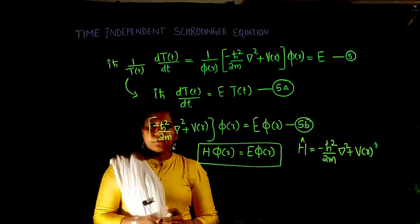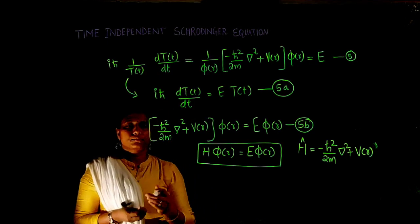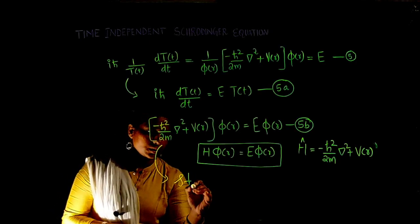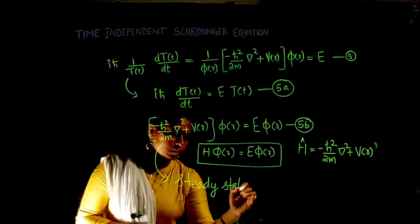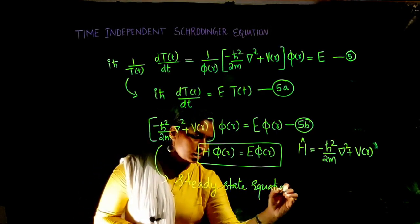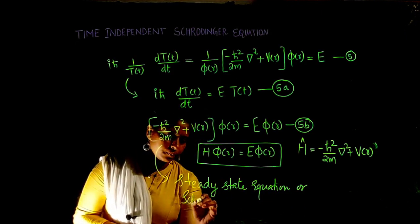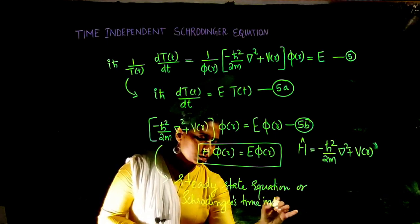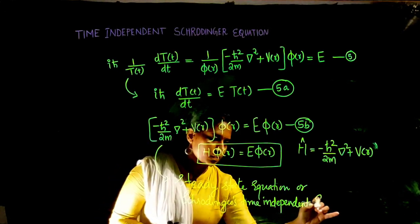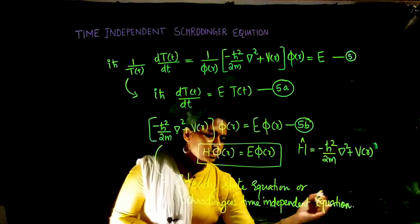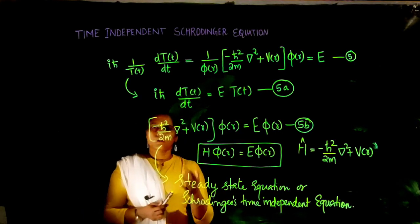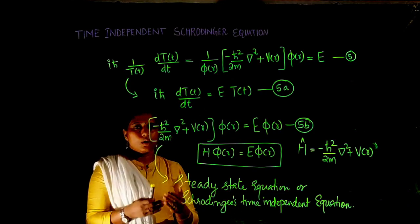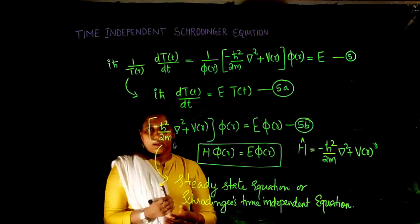Equation 5B represents the time-independent Schrödinger equation — there is no time dependence in this equation, so it represents the steady-state equation. We have thus derived the time-independent Schrödinger equation from the method of separation of variables, by assuming the wave function can be written as the product of a function of position and a function of time.